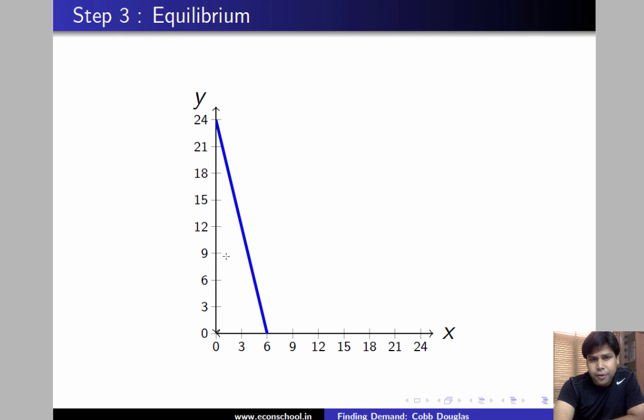This is our budget line. We want to plot a few ICs through the budget line and figure out exactly where the solution is going to lie. If you pick an arbitrary point like this, can the solution lie here? We're going to make an IC through this point.